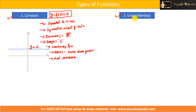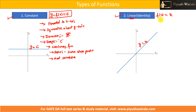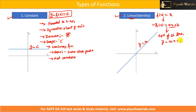Next function is linear function or identity function. What is linear function? For example, f of x equals to x. The graph will be y equals to x, passing through the origin at an angle of 45 degrees. We can generalize this as f of x equals to ax plus b. In this particular case a is 1 and b is 0. This is the equation of a straight line y equals to mx plus c, where m is the slope and c is the y-intercept. Comparing the two, a corresponds to m which is slope, and b corresponds to c which is the y-intercept.